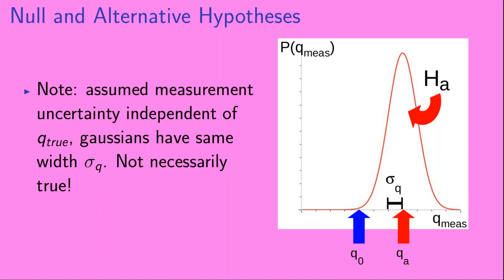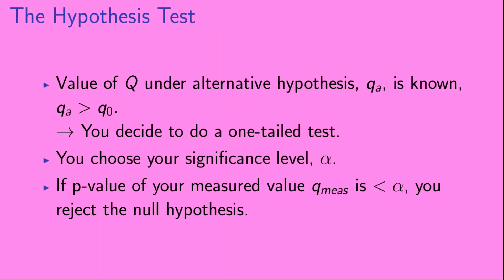Since the value of Q under the alternative hypothesis, Qa, is known and Qa is greater than Q0, you decide to do a one-tailed test. You choose your significance level alpha, and if the p-value of your measured value Q measured is less than alpha, you will reject the null hypothesis.